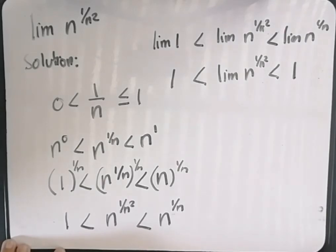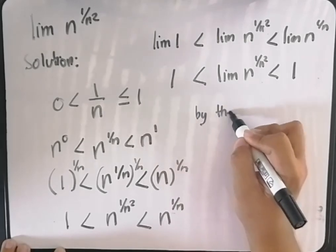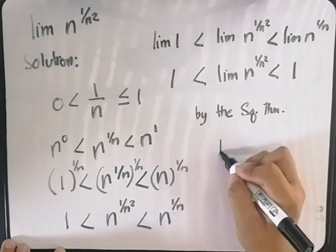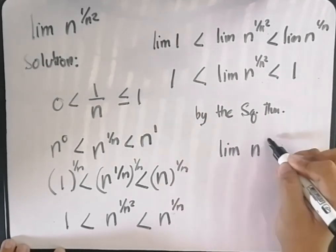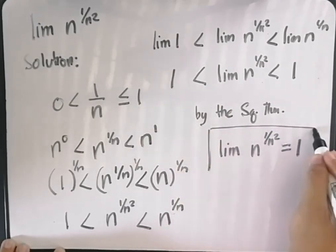Therefore, by the squeeze theorem, the limit of n raised to 1 over n squared is also equal to 1.